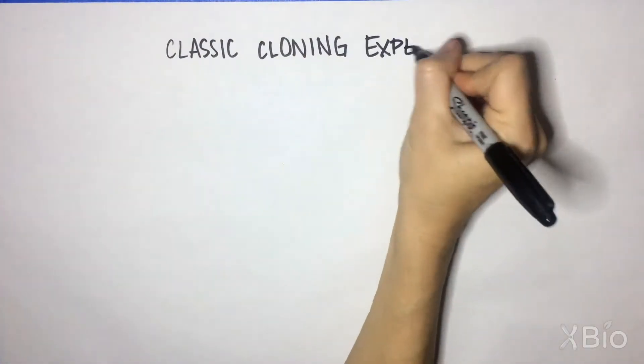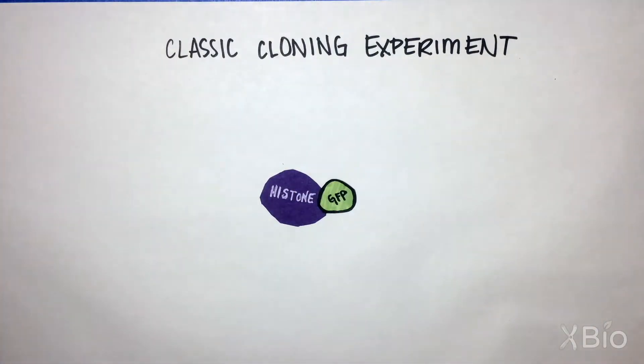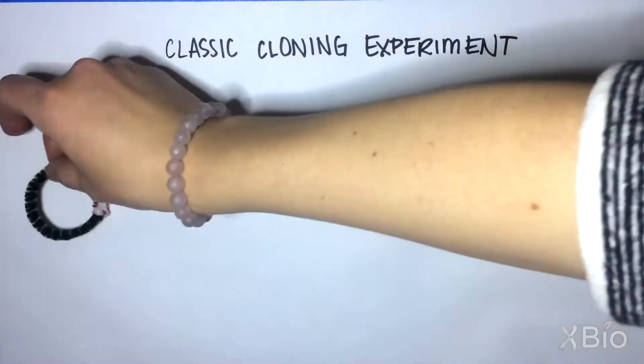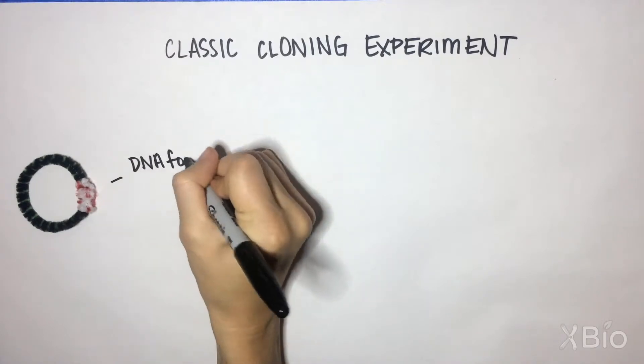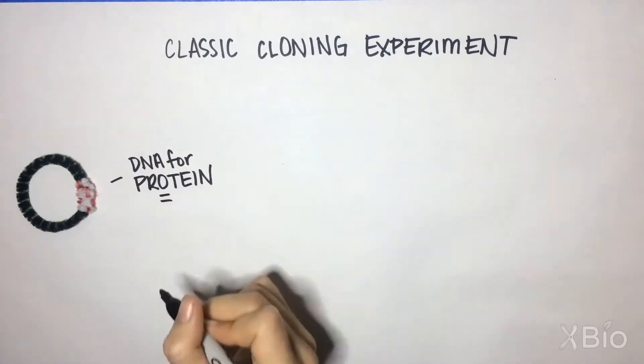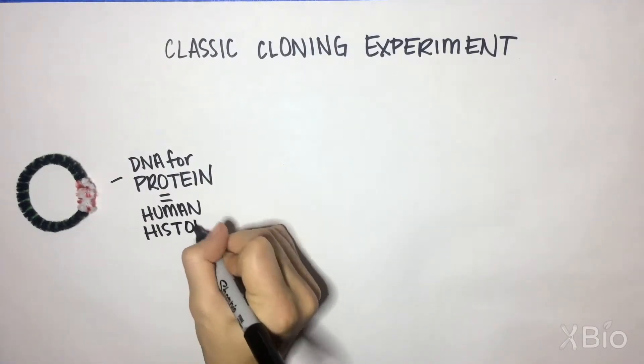Here's an example of a classic cloning experiment. Remember what we want: to over-express a tagged protein in the cell. We have a plasmid expressing the DNA for a protein. In this example, the human histone.